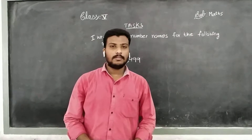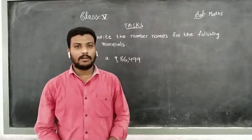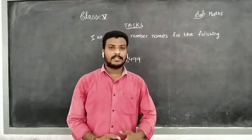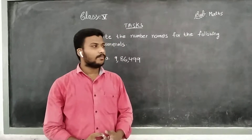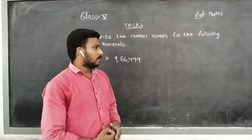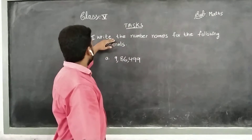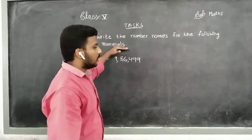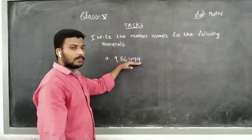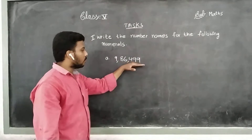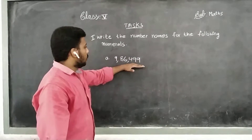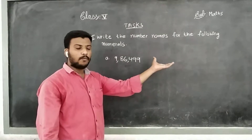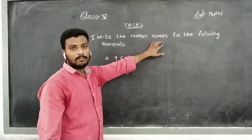Good morning children. Today we start online class for Class 5. In this class we will discuss the task. See children, Roman number 1: write the number names for the following numerals. They are given a number, or you can also call it a numeral. By identifying this numeral, we have to convert it into the word full form, or into the number name.